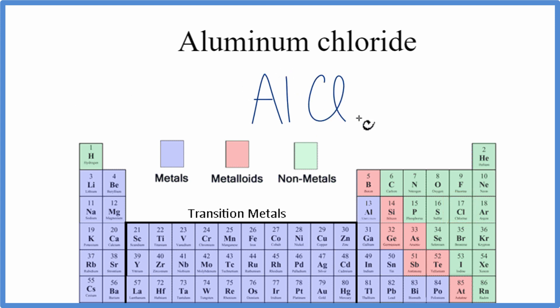Aluminum is a metal and then chlorine is a nonmetal, so this is an ionic compound. When we have ionic compounds, we do need to take into account the charge.